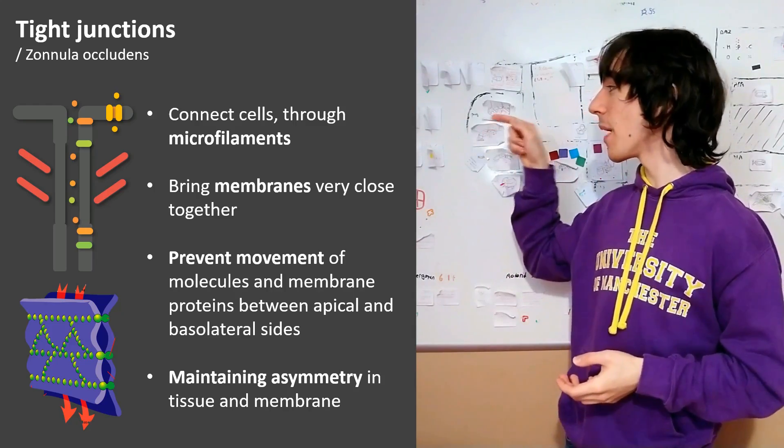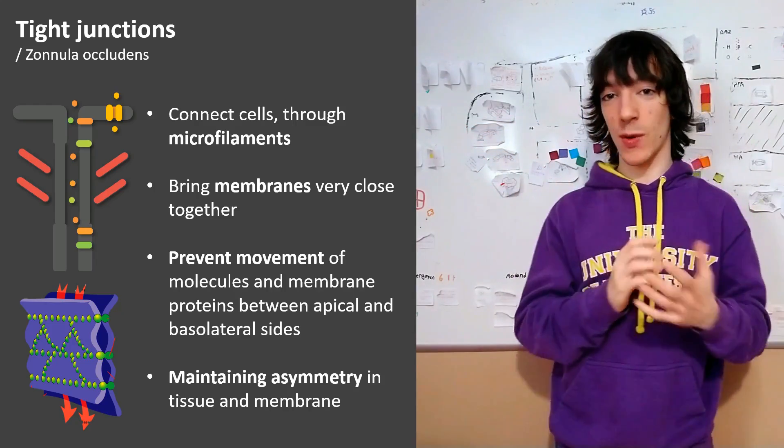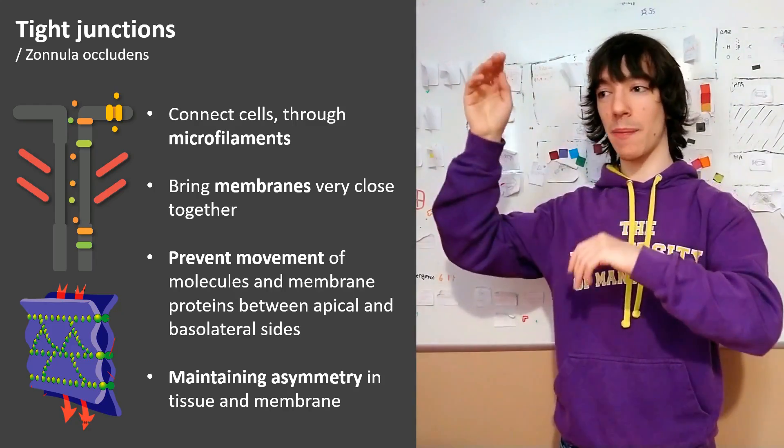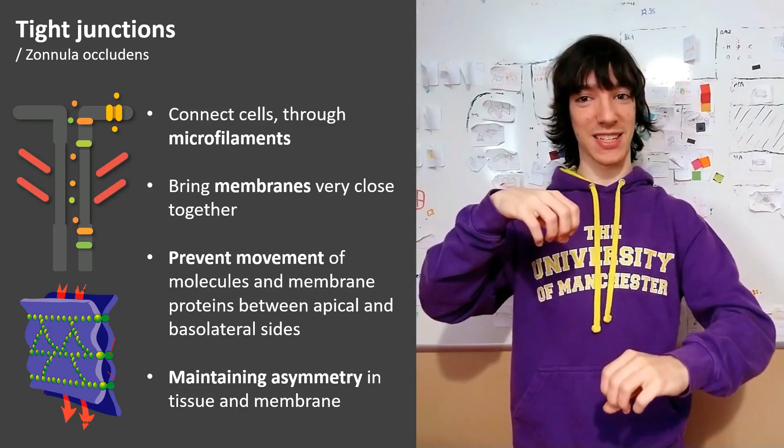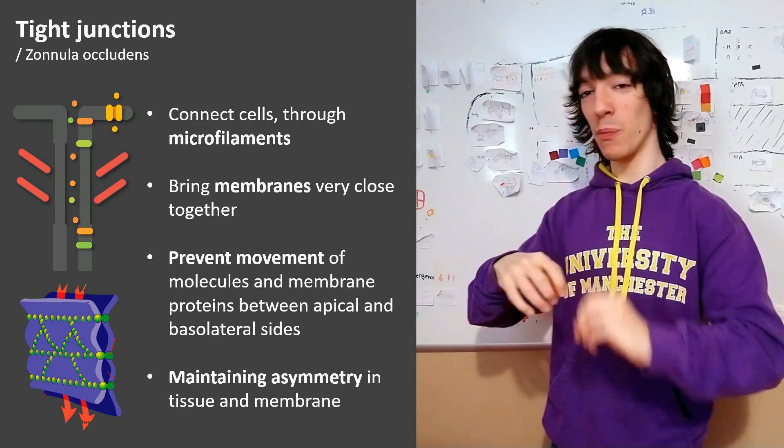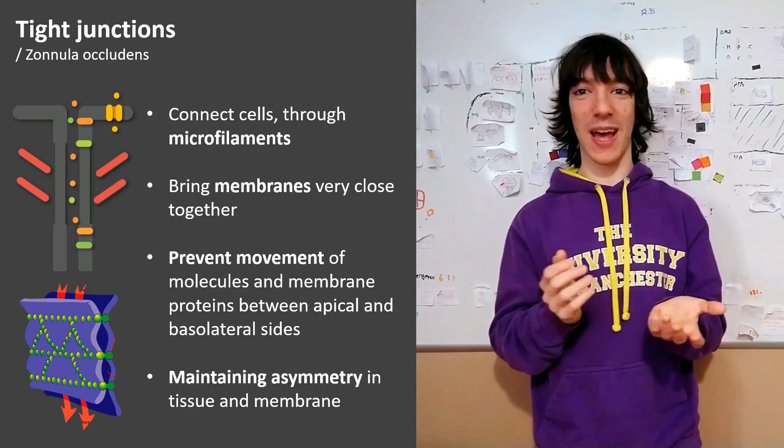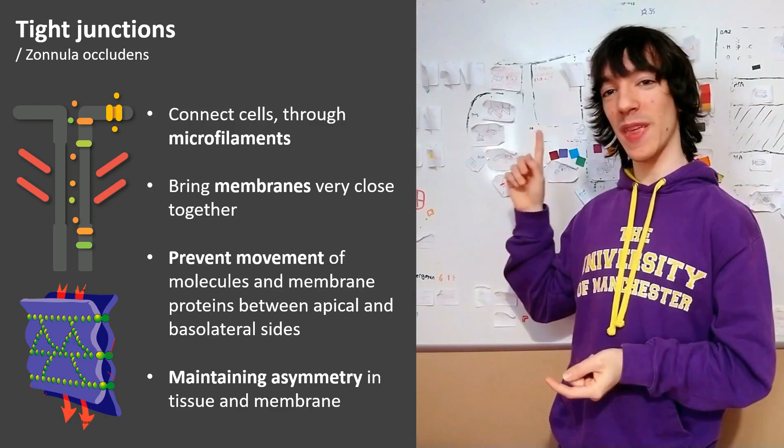The same would happen with the membrane proteins, for example, the transporters. They could mix up and end up in sites where we don't really need them, where they could take the nutrients that we had just moved to the other side and bring them back inside the cell. We don't want that happening, we only want them in the apical side.